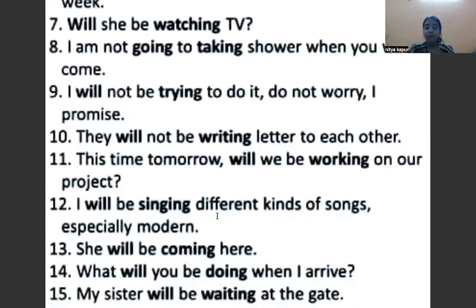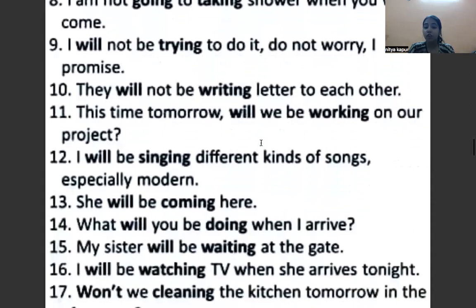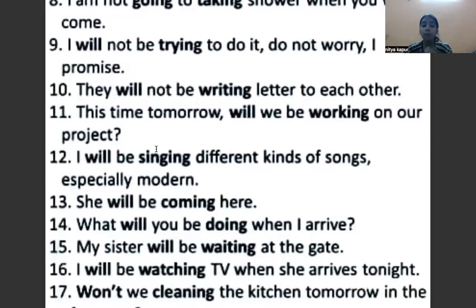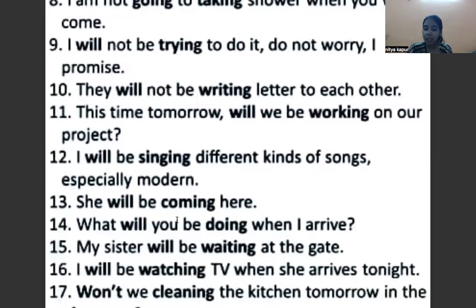I will be singing different kinds of songs, especially modern — मैं बहुत सारी different types के गाने गाऊँगा. Here 'I' is the subject, 'will be' is the helping verb, and 'singing' is the verb with ing. She will be coming here — वो यहाँ पर आएगी. Here 'she' is the subject, 'will be' is the helping verb, and 'coming' is the verb with ing.